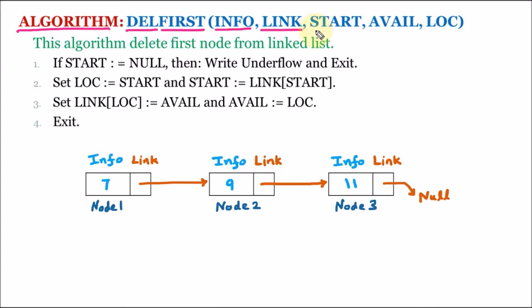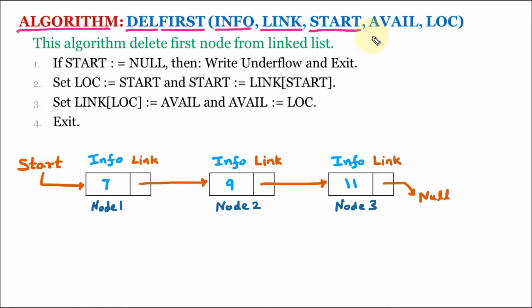The linked list on which we work has a start pointer. The start pointer contains the address of the first node, which is node 1. This is the linked list in which we store our elements. In the system there is also another linked list which contains the available spaces.